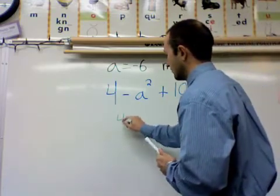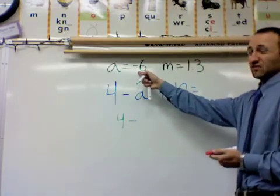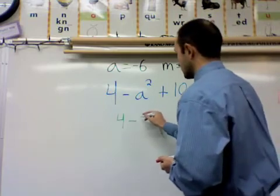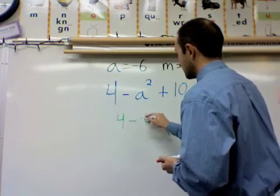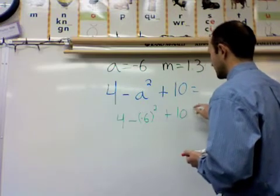Now I have 4 minus, remember A was a negative 6, so it's going to be negative 6 squared plus 10.